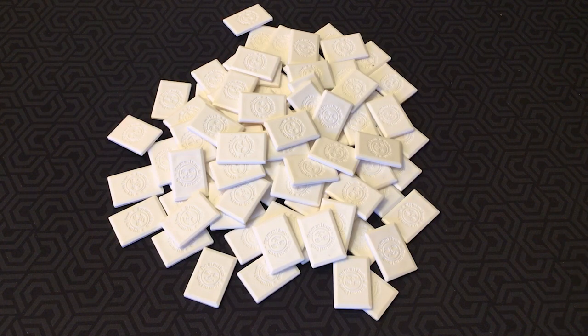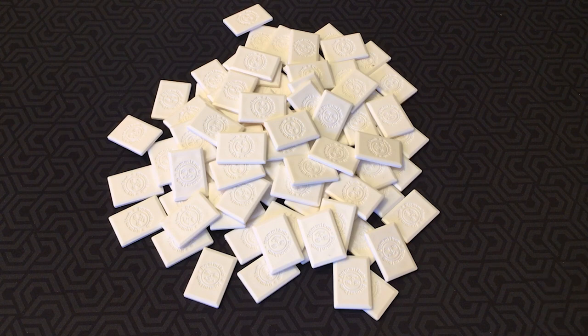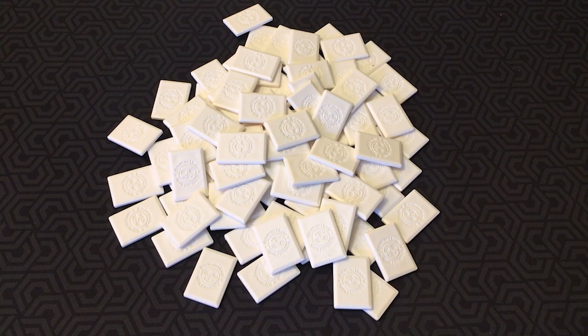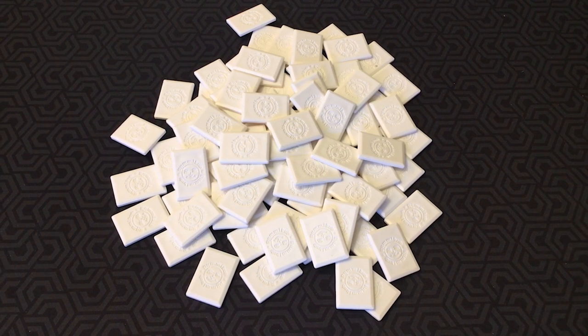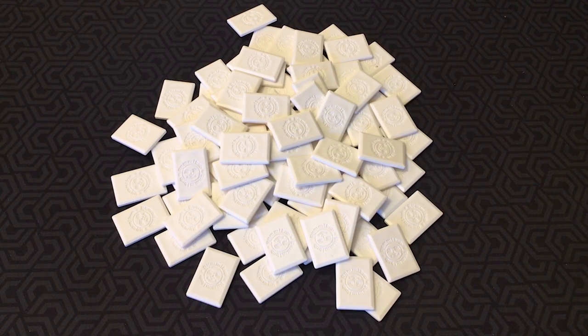The number of players determines the number of games in a round. With four players, a round is made up of four games. Three players, a round is made up of three games. Two players, a round is made up of two games. So when a player plays the last tile from their rack, a game ends. Players then start over again until they have played the number of games slash rounds they agreed to play.